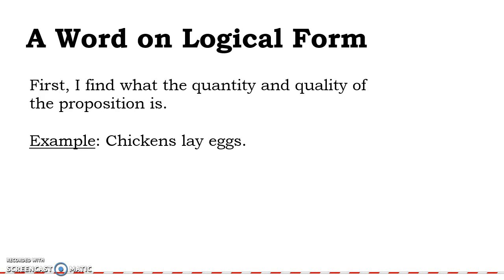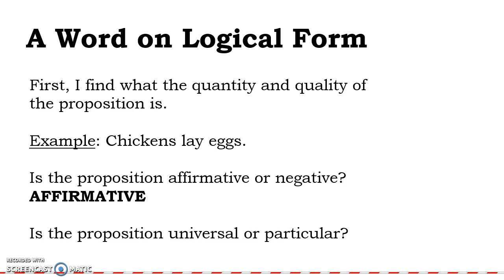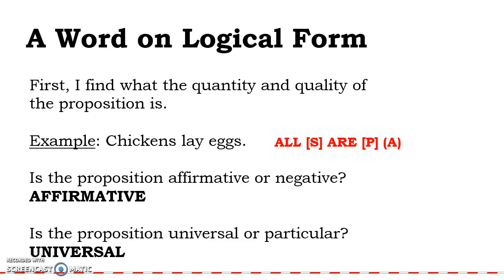First, I find what the quantity and quality of the proposition is — determining whether the proposition is affirmative or negative, and universal or particular. Here's a proposition: 'Chickens lay eggs.' Is it affirmative or negative? It's affirmative — we don't see any negative terms. Is it universal or particular? We're talking about all chickens, so it's universal. We have an affirmative universal, and we remember that the affirmative universal form is A: All S is P. So I need to turn the sentence into an 'All S is P' sentence.